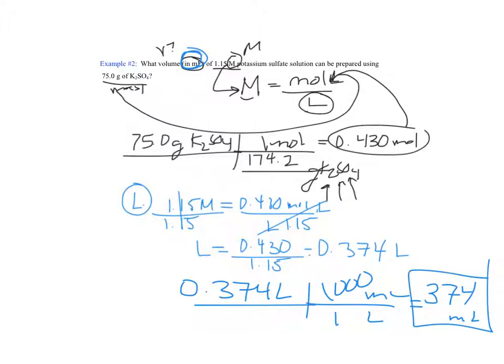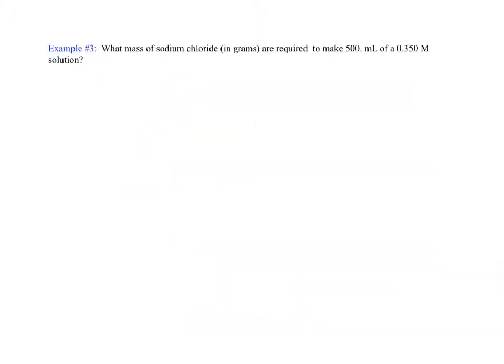But remember they want that final answer specifically in milliliters. So we just got to remember our metric system and take that answer and do a one-step liters to milliliters. We know that there are 1,000 milliliters in one liter, and so that's equivalent to 374 milliliters. That would be the volume of that total solution if that was the molarity, and that's how many grams of solute were present.